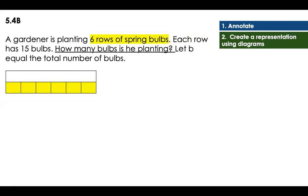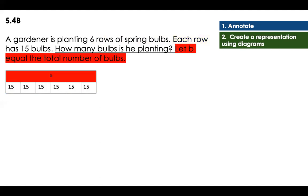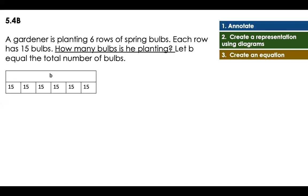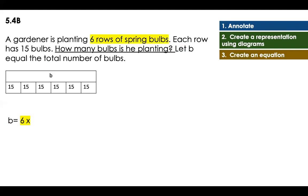Now let's create a representation using the strip diagrams. In the representation, we have six rows, meaning six parts are represented here. Each of those rows has 15 bulbs — you can see the 15 here representing six groups of 15 bulbs. The B, which is the total, goes on top because that's what I need to find. Now I'm going to create an equation: B, that is the total, is going to be equal to six parts of 15 each.